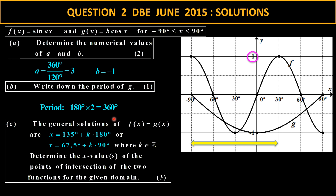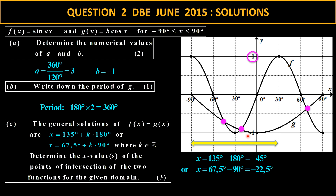Now find the general solution for the points of intersection. This one is somewhere between negative 60 and 30. Calculating: 135 minus 180 gives me negative 45, so that point is negative 45. The next point of intersection — taking 67.5 minus 90 — gives negative 22.5. And taking 67.5 with k equal to 0 gives 67.5. So there are three points of intersection: negative 45, negative 22.5, and 67.5.